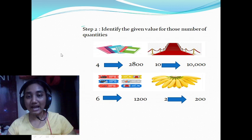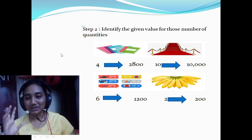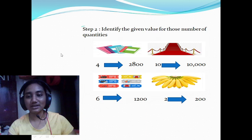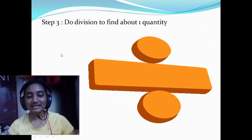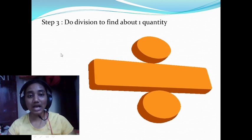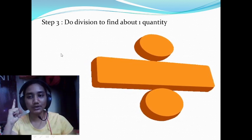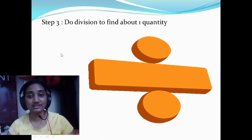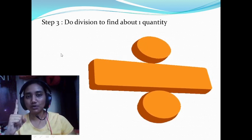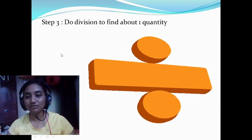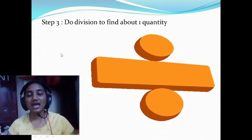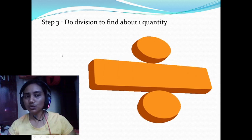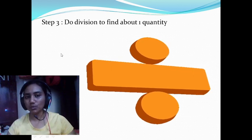In the second step, identify the numerical. Yes, only the numerical. We are going to put over here and in the next step, we are going to find the value of one quantity because this is unitary method. We find the value of one quantity. For that, we need to do the division and now, I got to know the value of one quantity.